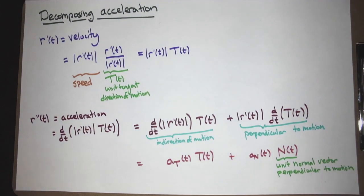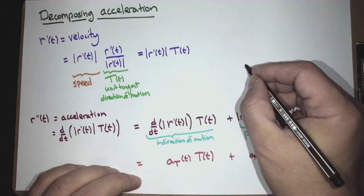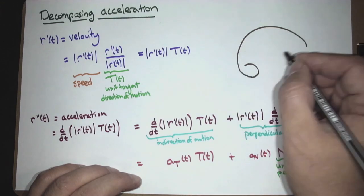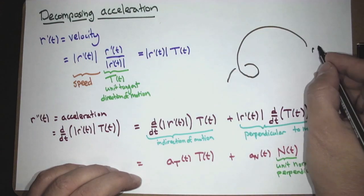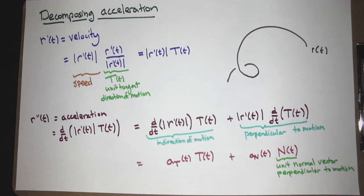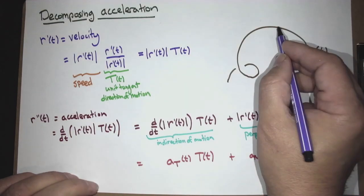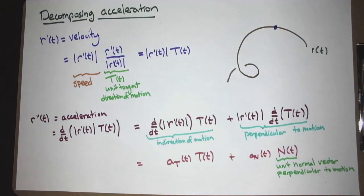Today's topic: we're going to talk about decomposing acceleration. Imagine we have a curve going through space — here's our curve, r of t, moving through. We want to understand what's happening with acceleration. The direction of motion is captured by r prime of t. Acceleration — r double prime of t — is a bit more subtle because it doesn't necessarily go directly with motion; oftentimes it pulls a bit to the side.